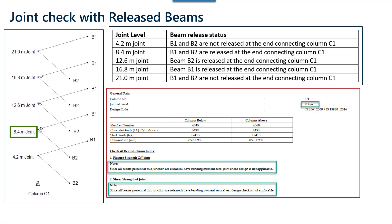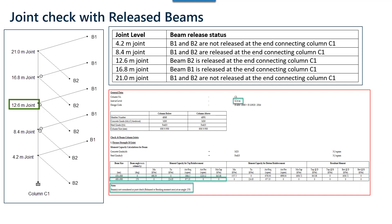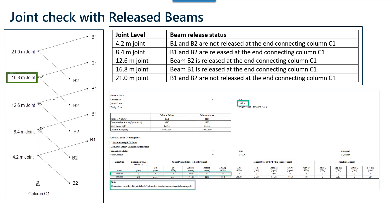At joint 12.6, where only one beam is released, the capacity of the released beam is considered as 0. The capacity of the beam that is not released is fully calculated and considered for performing the joint check. At 16.8 meters, the same situation applies but the other beam at 0 degrees is released.